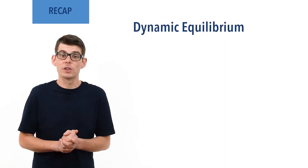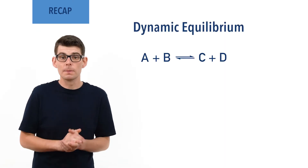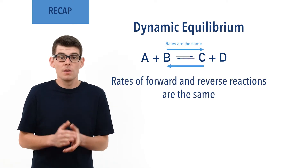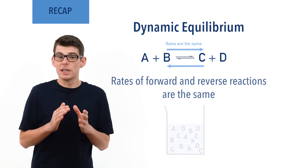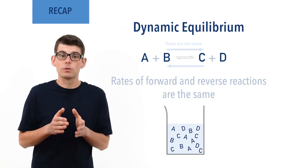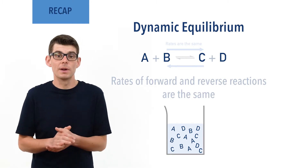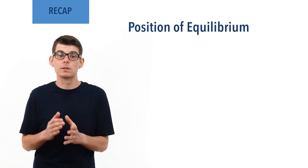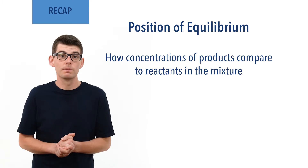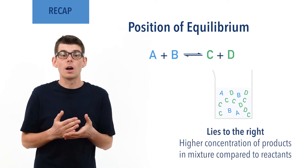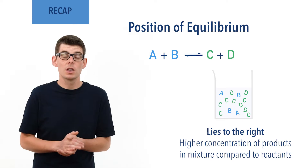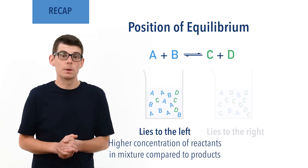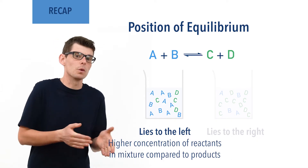A dynamic equilibrium refers to a reversible reaction in a closed system in which the rates of the forward and reverse reactions are the same. This means at equilibrium there is a mixture containing both reactants and products, and their concentrations remain constant as long as the system remains at equilibrium. A position of equilibrium refers to how the concentrations of reactants and products compare to each other. A position to the right means a higher concentration of products; a position to the left means a higher concentration of reactants.